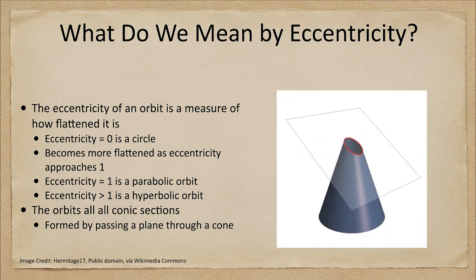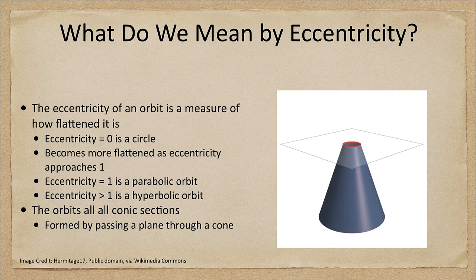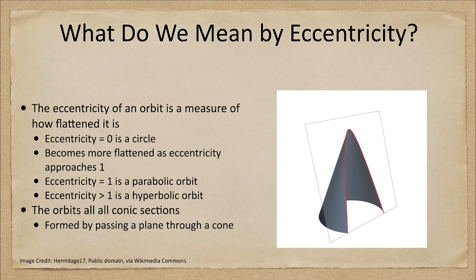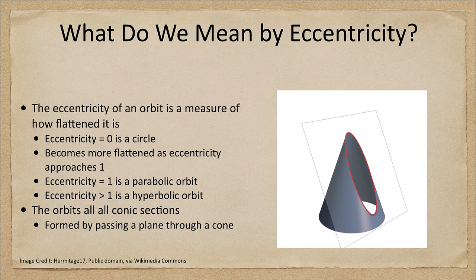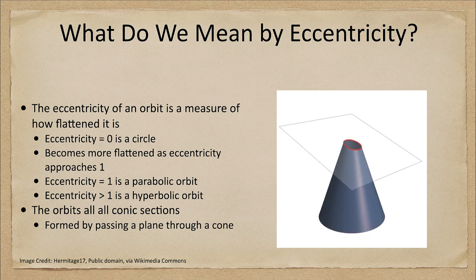So what is a conic section? You imagine a plane being sliced through a cone. When the plane is flat and parallel to the base, you get a circle. As you start to tilt that plane, you get ellipses of various sizes, getting more and more flattened as you stretch it down. Eventually it breaks the bottom, becoming parabolic, and then continuing as you tilt further, it becomes a hyperbolic orbit.